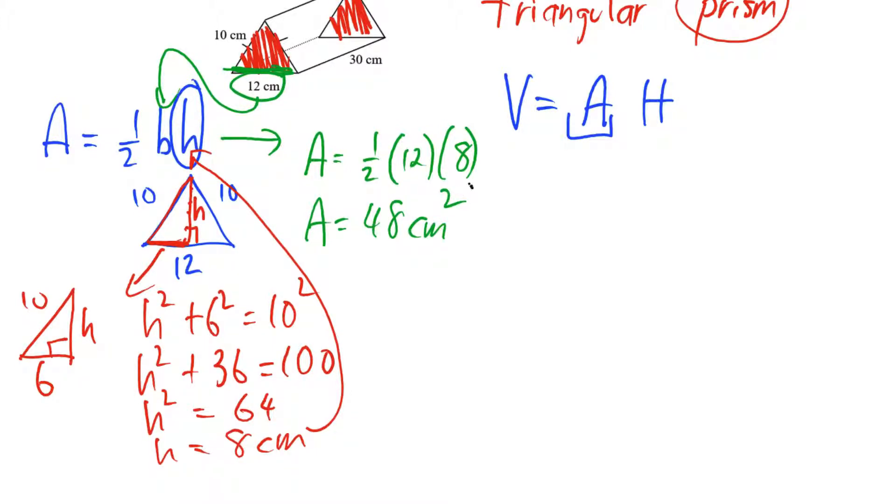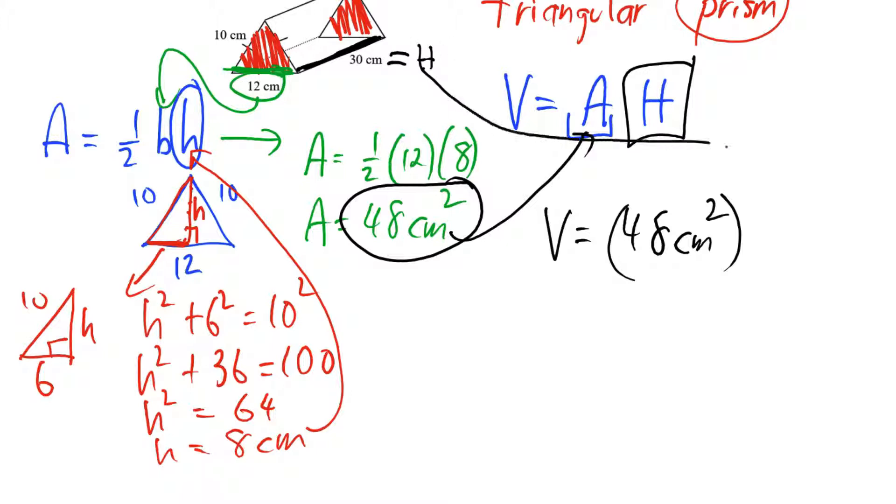Now that we have the area of the base, we can put that number into our volume formula as 48 centimeters squared times big H, which is different than little h. Big H, remember, is the distance from base to base in the prism, which is our 30. So our 30 goes in for H. And we do our calculation. Volume is 48 times 30, which will be 1440 centimeters cubed.